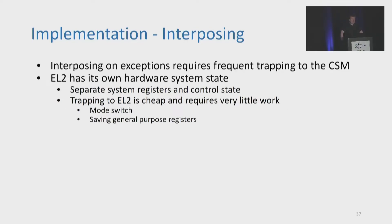This implementation means the CSM has to be trapped to on every exception at least twice, which seems like it would be prohibitively expensive. However, ARM's hypervisor level EL2 has its own hardware state with separate system registers and control state from the other levels. This means trapping to EL2 can be very cheap, essentially only requiring the saving of general-purpose registers, allowing the CSM to interpose with limited performance overhead.